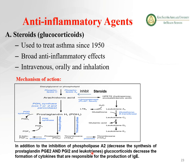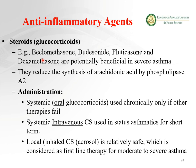In addition to decreasing inflammatory mediators, glucocorticoids also decrease the formation of cytokines responsible for IgE production, reducing the hypersensitivity that is a main trigger for asthmatic attacks. Glucocorticoids available for asthma management include beclomethasone and dexamethasone, which are potentially beneficial in severe asthma. Oral glucocorticoids can be used chronically only if other therapies have failed; systemic intravenous glucocorticoids are used in status asthmaticus for a short period of time.